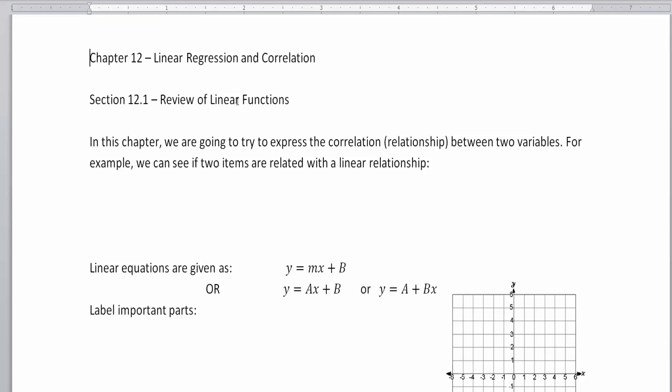In this chapter we're going to express correlation or the relationship between two values. So we have two items related with a linear relationship. Now the two items are going to be talked about as X and Y. Let's say X was the price of a soda and Y would be the revenue generated by that soda. So the price of the soda is related to how much that soda makes for you.